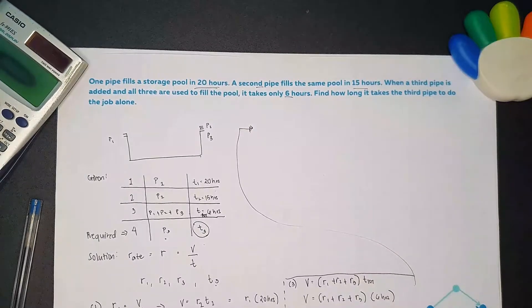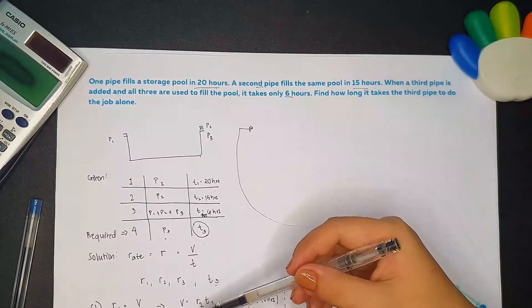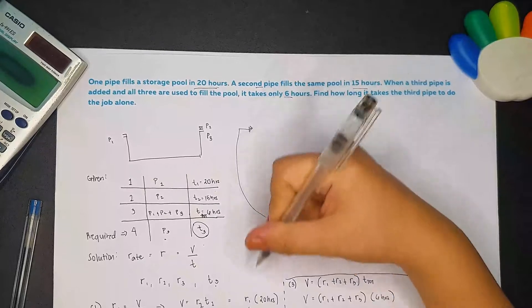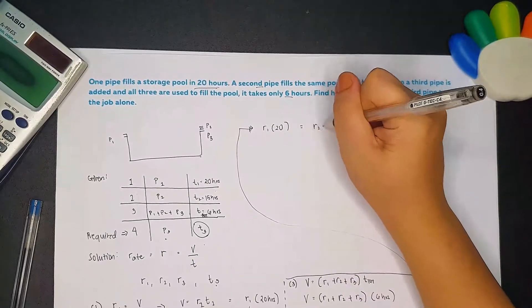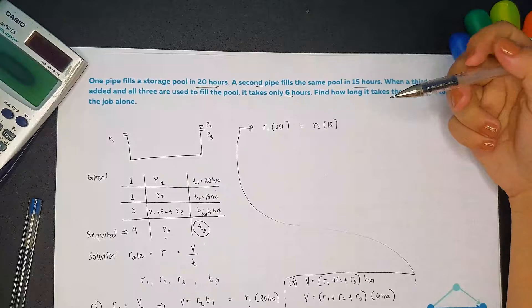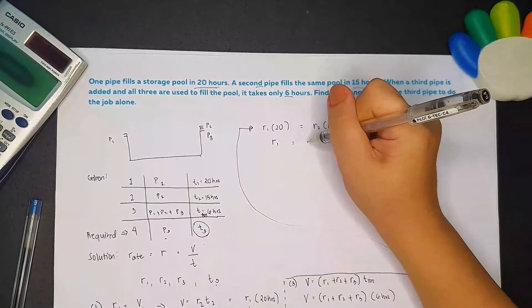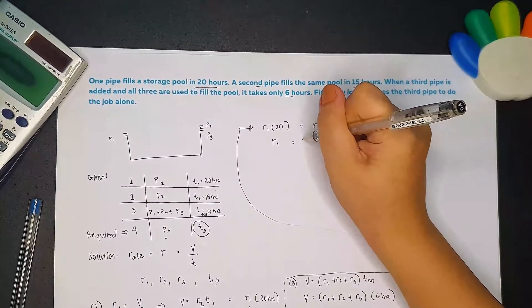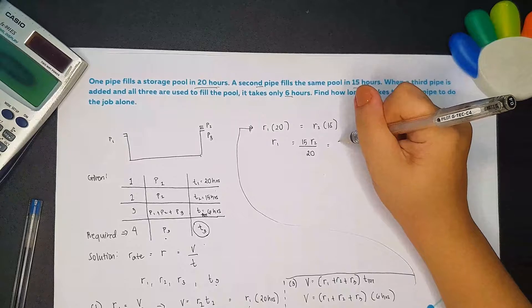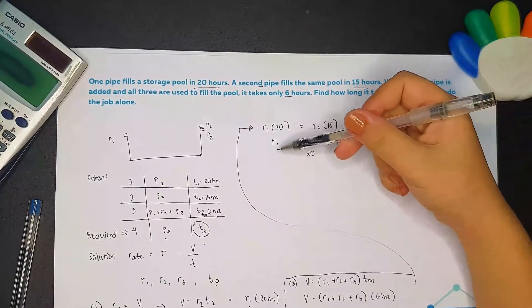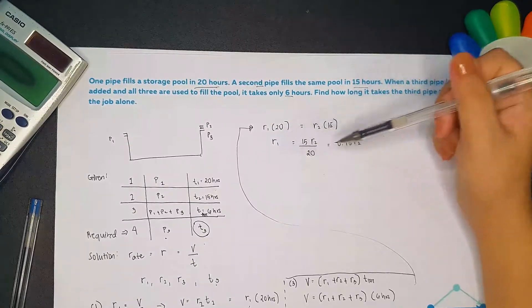Using equations 1 and 2, since R1 and R2 are both equal to V which is constant, let's equate them. So R1 times 20 equals R2 times 15. Solving for R1, we get R1 equals 15 R2 over 20, which gives us R1 equals 0.75 R2. So we write R1 in terms of R2.